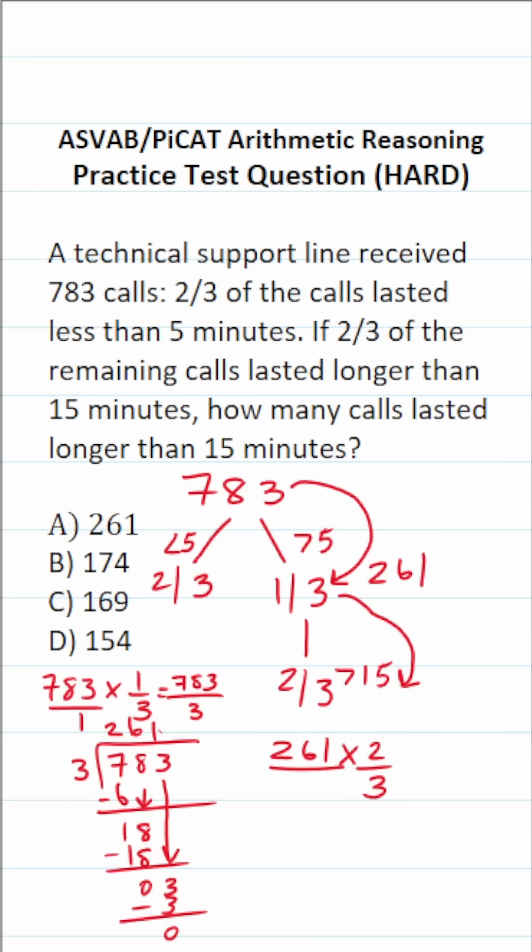I'm going to write 261 as a fraction by placing it over one, and I'm going to try to cross-reduce this. I'm going to say three goes into three one time, and I know that three must go into 261. So what I'm going to do is 261 divided by three. Three goes into 26 eight times without going over. Three times eight is 24. 26 minus 24 is going to be two. Drop down this one.